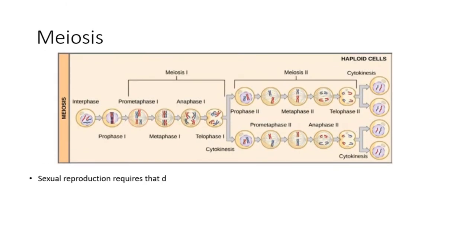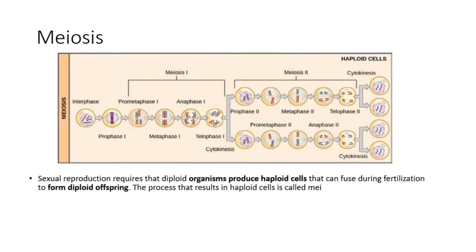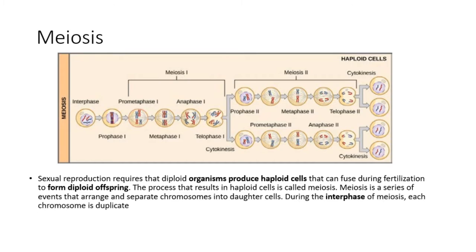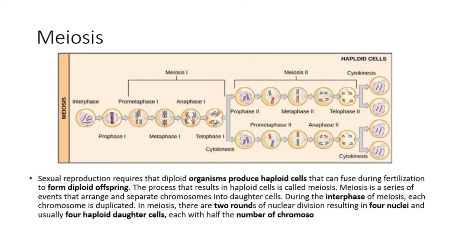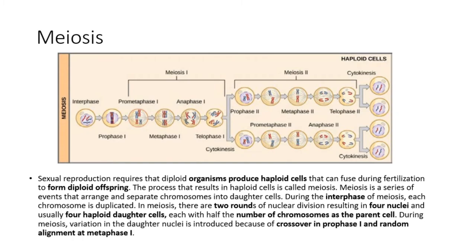Sexual reproduction requires that diploid organisms produce haploid cells that can fuse during fertilization to form diploid offspring. The process that results in haploid cells is called meiosis. Meiosis is a series of events that arrange and separate chromosomes into daughter cells. During the interphase of meiosis, each chromosome is duplicated. In meiosis, there are two rounds of nuclear division resulting in four nuclei, and usually four haploid daughter cells, each with half the number of chromosomes as the parent cell.